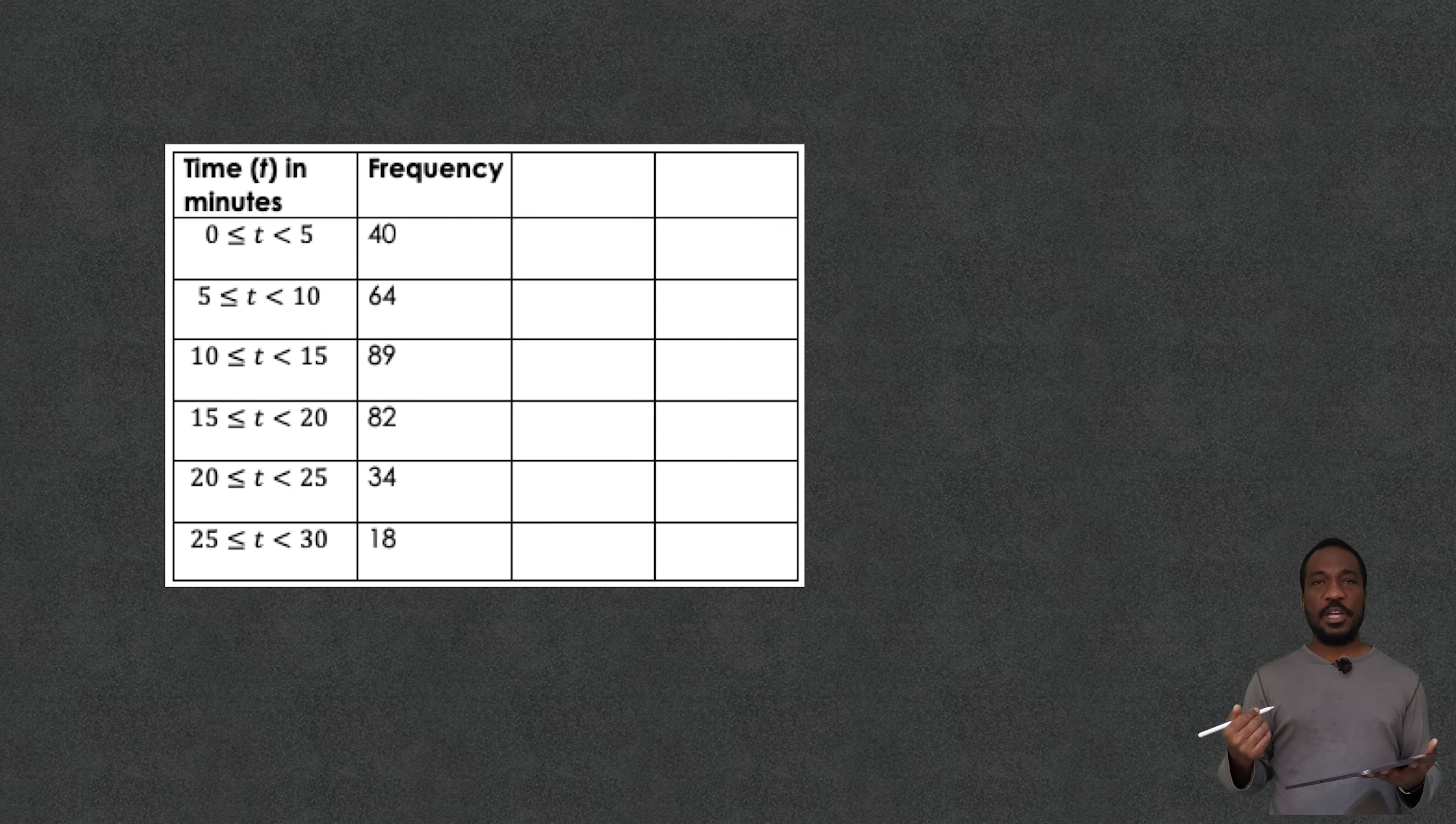So the first bit of average I want to find out is the mean. Now how do you calculate the mean when the data looks like this? Now this mean is going to be called an estimate. So we're going to estimate the mean.